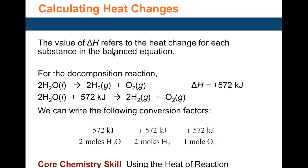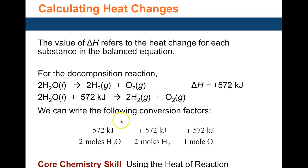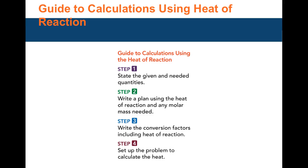To calculate heat changes, consider the decomposition of water, which is endothermic — it requires 572 kilojoules to produce hydrogen and oxygen. You can use this just like mole-mole conversion factors: two moles of water require 572 kJ, two moles of hydrogen formation requires 572 kJ, and one mole of oxygen formation also requires 572 kJ. Heat is treated as a reactant.